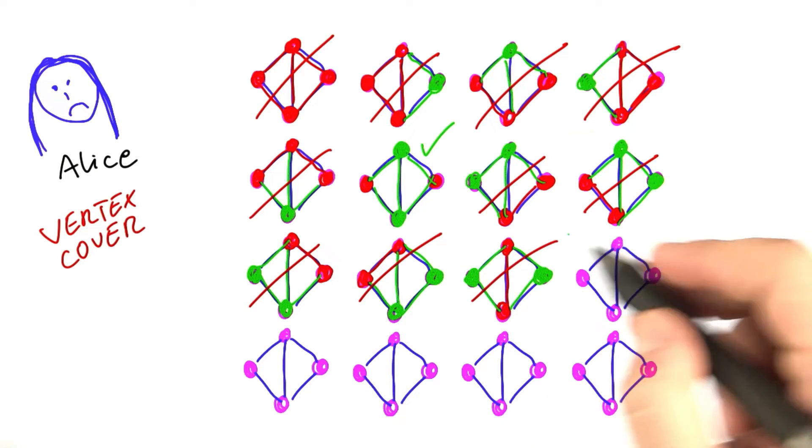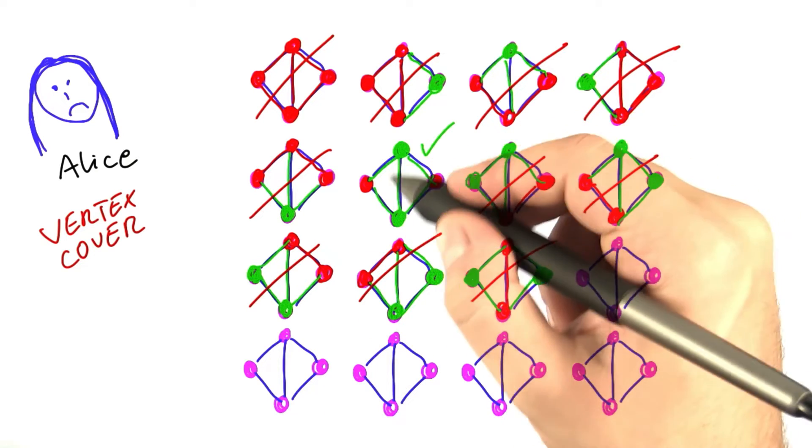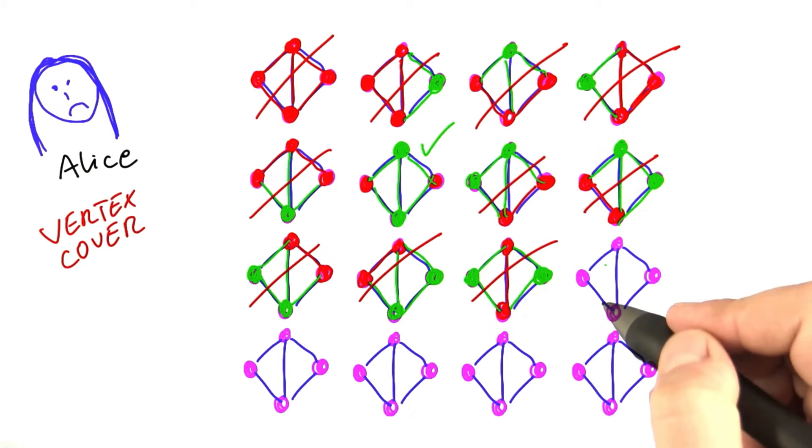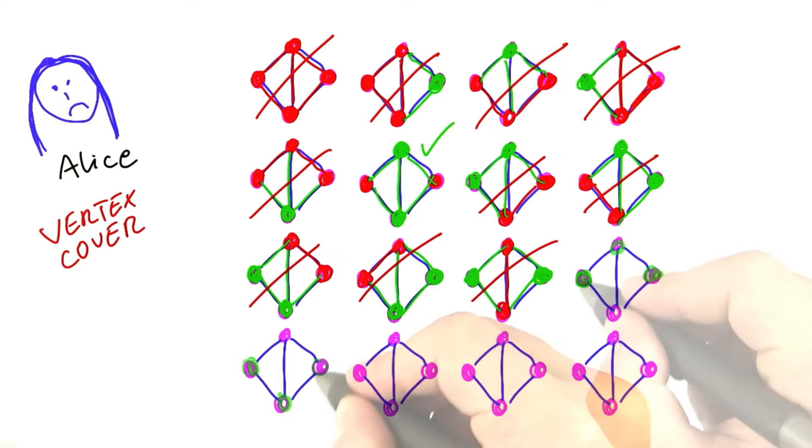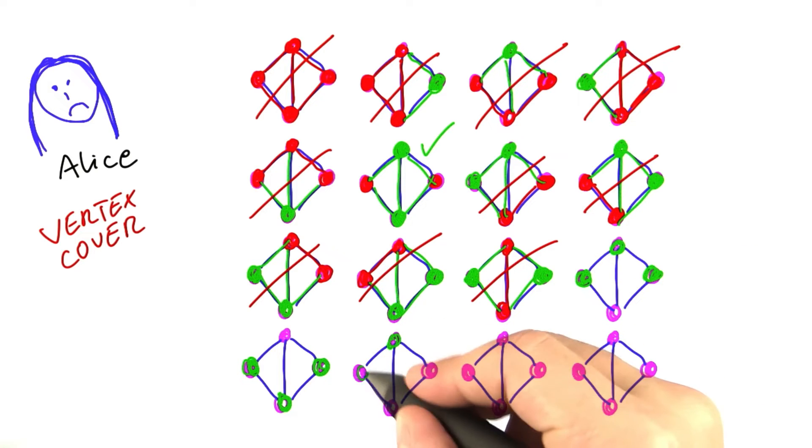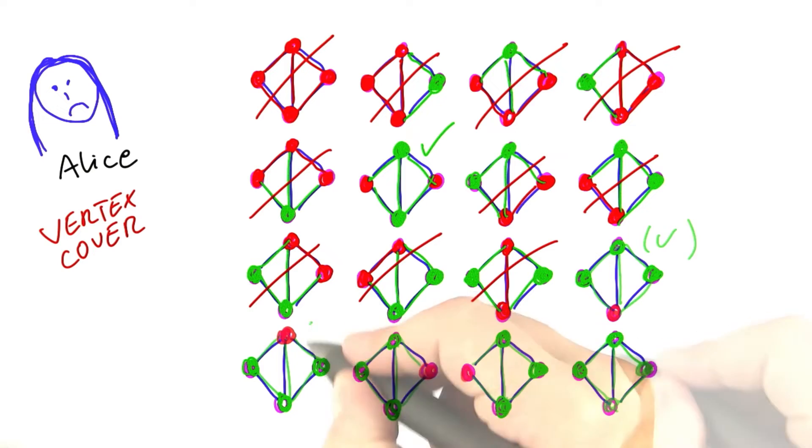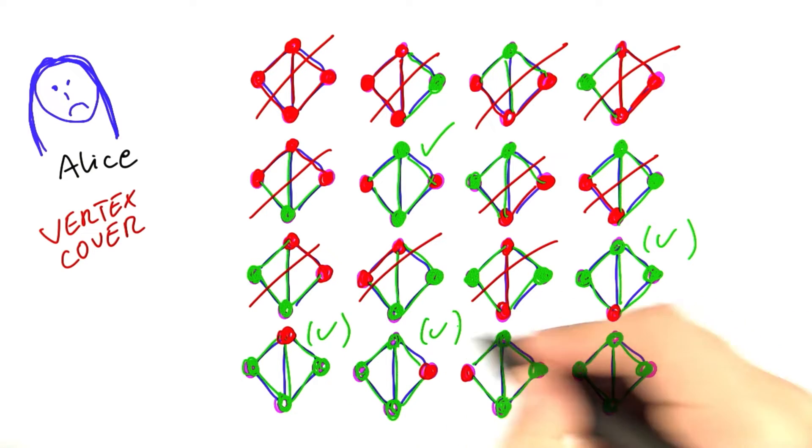And now the algorithm proceeds, and although it has already found a solution where two vertices are enough for the VertexCover, it now puts three vertices into the VertexCover, which has the advantage that it will always find a valid VertexCover, but the disadvantage that it's totally redundant and unnecessary work. Same thing if you put all four into the VertexCover. Valid solutions, but not the best possible ones.